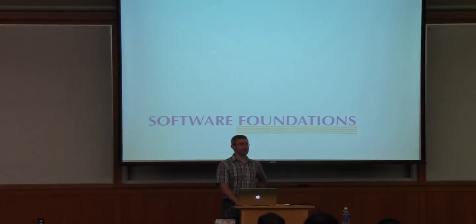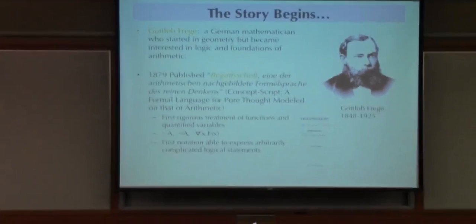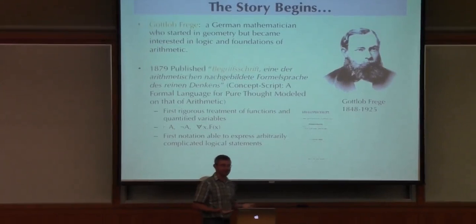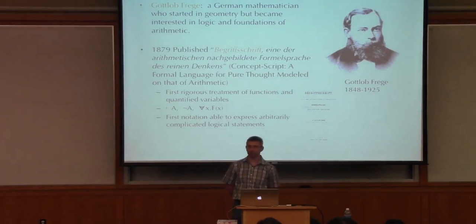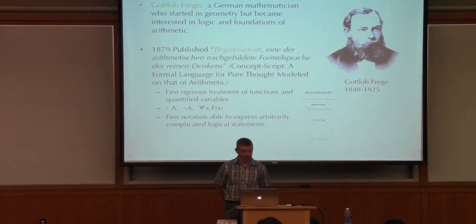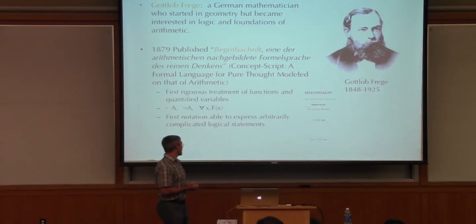Yesterday you were divided up into teams, so feel free to cheer as the story develops. Where I want to begin is quite a while back — the story of Gottlob Frege. He was a German mathematician who started doing geometry but got very interested in logic and the foundations of arithmetic, and way back in 1879 he published a foundational text. My German is terrible, but it's the Begriffsschrift — basically, the concept script.